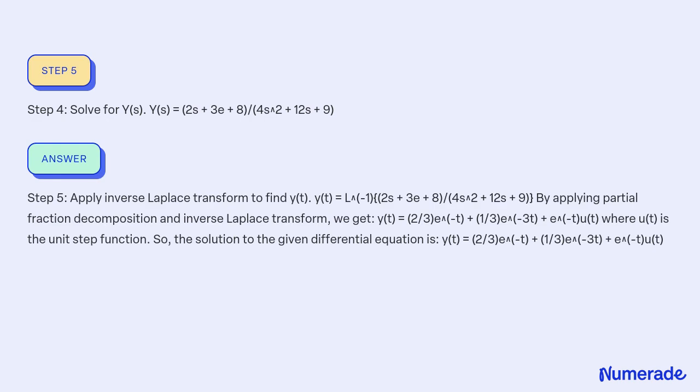Step 5: Apply inverse Laplace transform to find y(t). y(t) = L⁻¹{(2s + 3 + 8) / (4s² + 12s + 9)}. By applying partial fraction decomposition and inverse Laplace transform, we get y(t) = (2/3)e^(-3t/2) + (1/3)te^(-3t/2), where u(t) is the unit step function. So, the solution to the given differential equation is y(t) = (2/3)e^(-3t/2) + (1/3)te^(-3t/2).